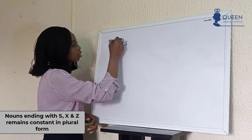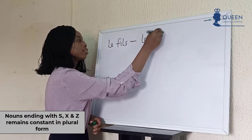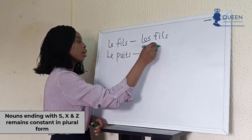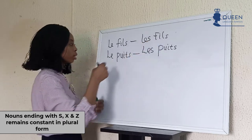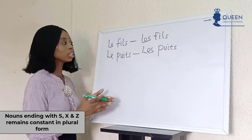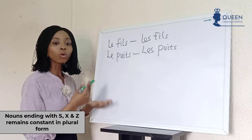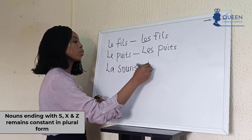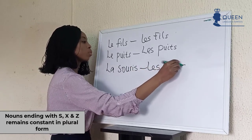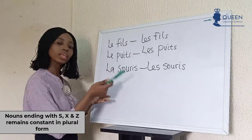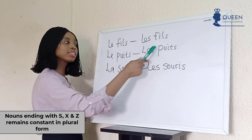Let's look at examples. We have 'l'office' — in the plural form we are going to have 'les offices.' We have 'la souris.' For French words that have -s in the singular form, in their plural form they remain constant. This includes words like 'l'office,' 'la souris.'